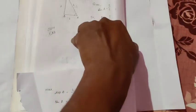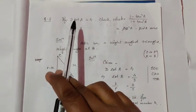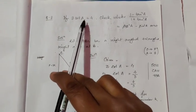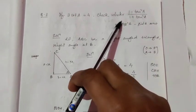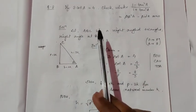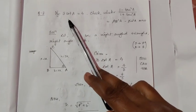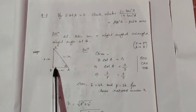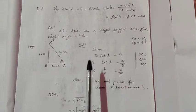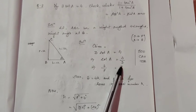Now cos A means base by hypotenuse. The base is √7k and the hypotenuse is 4k, so after simplifying, cos A equals √7 by 4. Similarly, find tan A yourself. Next, let us learn how to solve the next type of question. Here it is given that 3 cot A equals 4, and you have to check whether two given statements are equal or not.